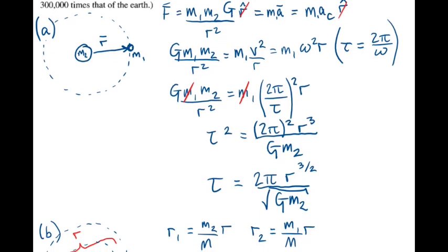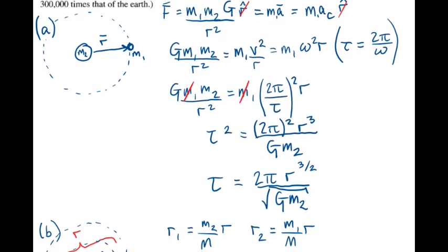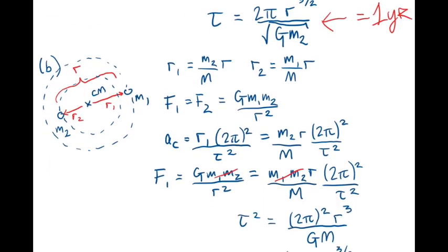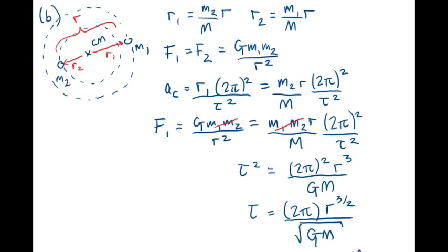So in part A, recall that the orbital period was equal to 2 pi r to the 3 halves over the square root of the gravitational constant times m2, or in this case the mass of the sun. In this case the orbital period tau equals 1 year. In the new system where earth has been replaced by a star, the situation is more accurately approximated by part B, where the masses of m1 and m2 are comparable. So our expression for the period there was given by tau equals 2 pi r to the 3 halves over the square root of the gravitational constant times the total mass of the system.